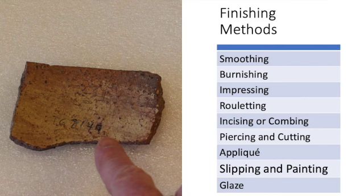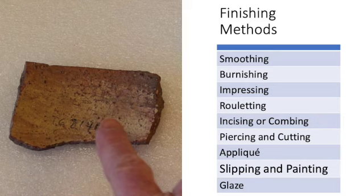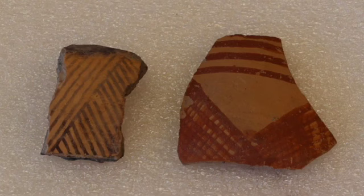A slip occurs as a distinct layer on top of the vessel surface, sometimes but not always differing from the underlying fabric in color. When they do differ in color, often as a result of firing conditions,